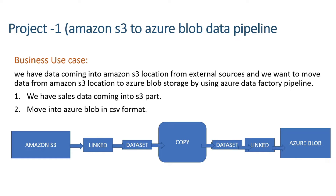So let us try to understand the business requirement. We have data coming into Amazon S3 from external resources — suppose you have a web application or any other device platform — from there your data is coming and getting stored into Amazon S3. What we are going to do is move data from Amazon S3 location to Azure Blob Storage by creating a Data Factory pipeline. Based on a scheduled time, the data will get moved from Amazon S3 to Azure Blob Storage.